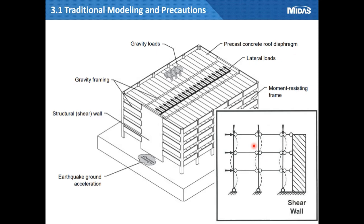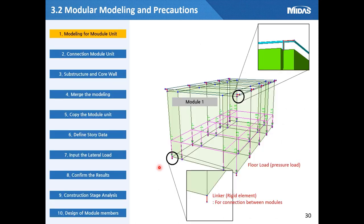We can summarize the modeling and analysis issues into five things: column buckling length and lateral force resistance system, multi-story inter-lateral force resistance system, design for the diaphragm, definition of appropriate boundary conditions, and design for the joint detail. So far, we have talked about the modeling technique considerations for analysis and modeling tips using Midas Gen for traditional precast system structures.